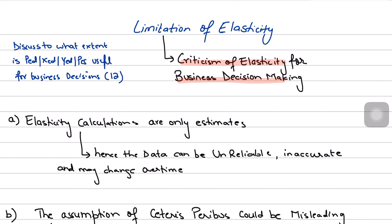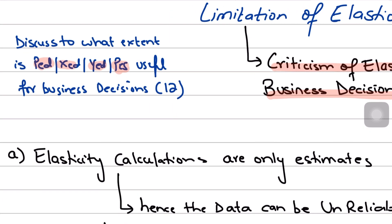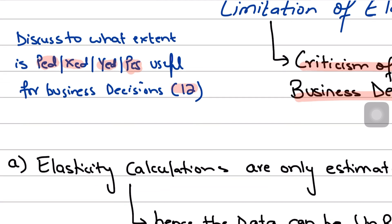You have seen a lot of questions in past papers. In AS, they usually ask us: to what extent is PED useful? To what extent is XED, YED, or PES useful in business decision making? And these are your 12-mark questions.